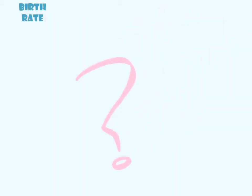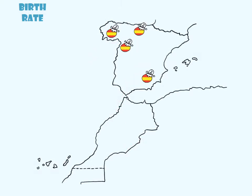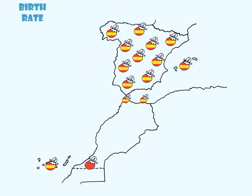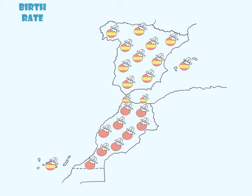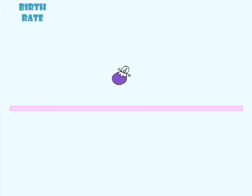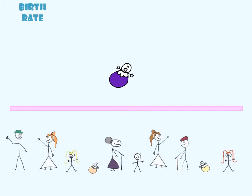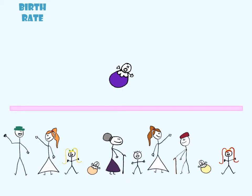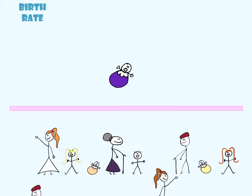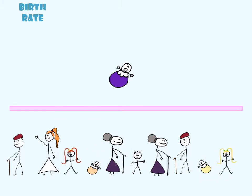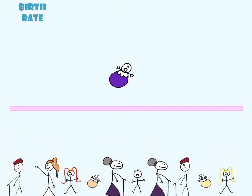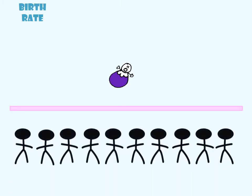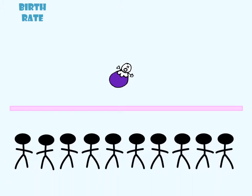For example, if we wish to compare births occurring in the same year in Spain and Morocco, we would only need to carry out a very simple calculation. We divide the number of births by the population. Be careful, since the inhabitants of a country during a year are changing constantly, we use the average population in the denominator.